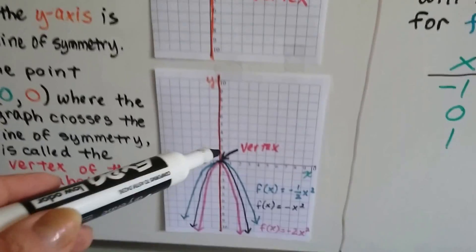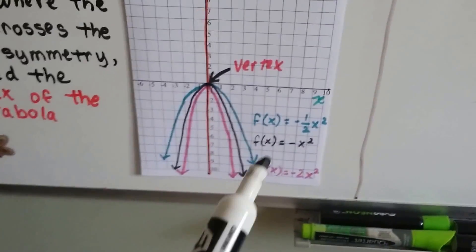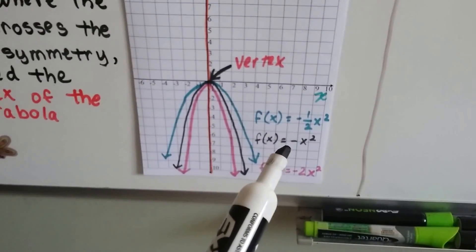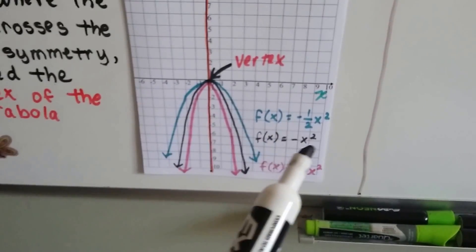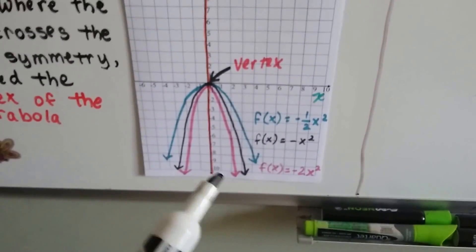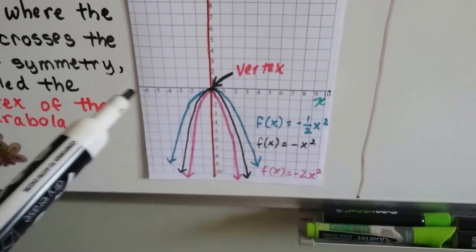We can also look at negative values. We have one-half x squared and negative one-half x squared, and negative x squared and negative 2x squared, so those are below the x-axis.